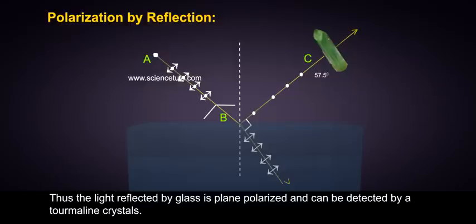Thus, the light reflected by glass is plane polarized and can be detected by a tourmaline crystal.